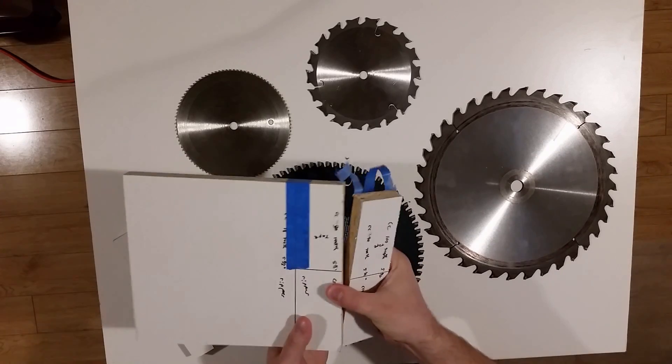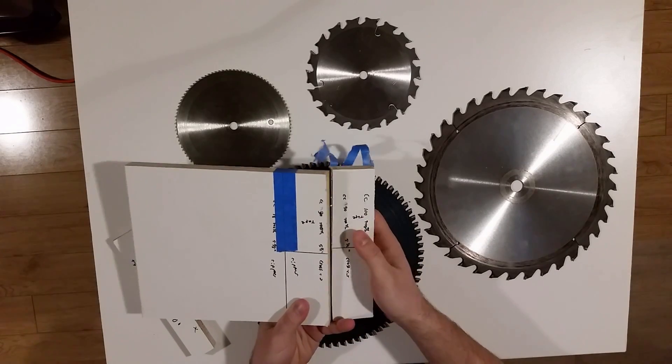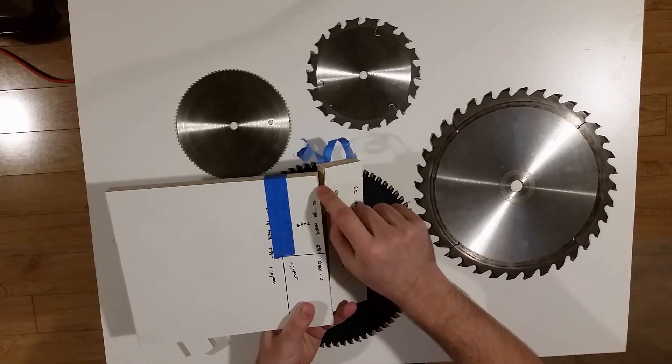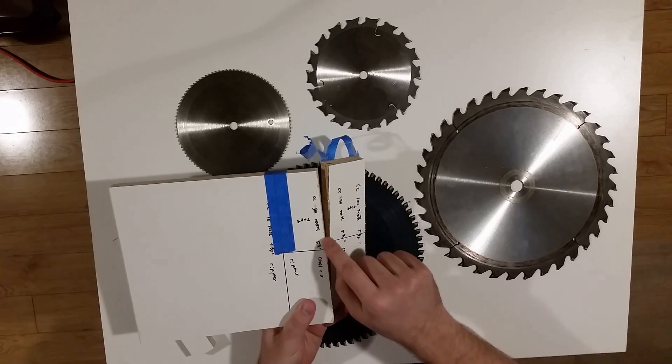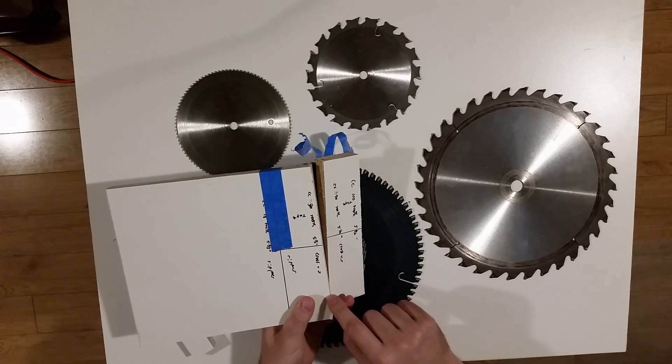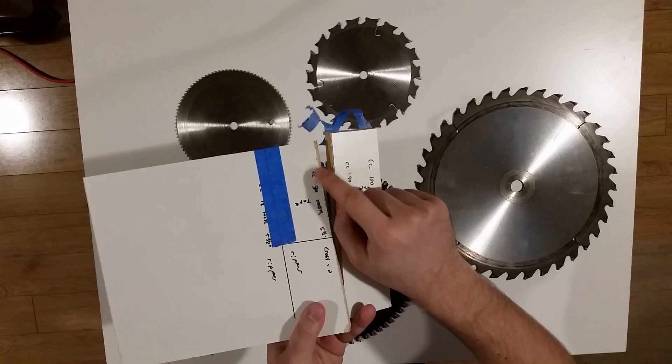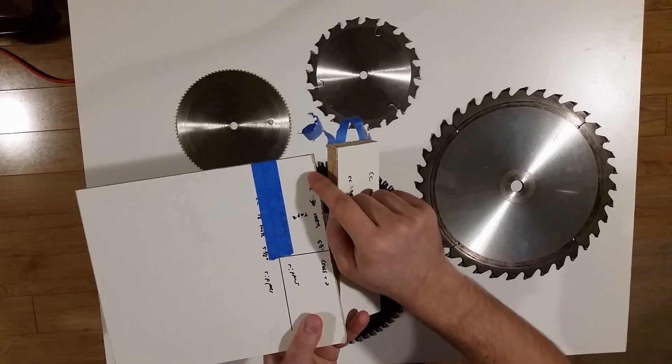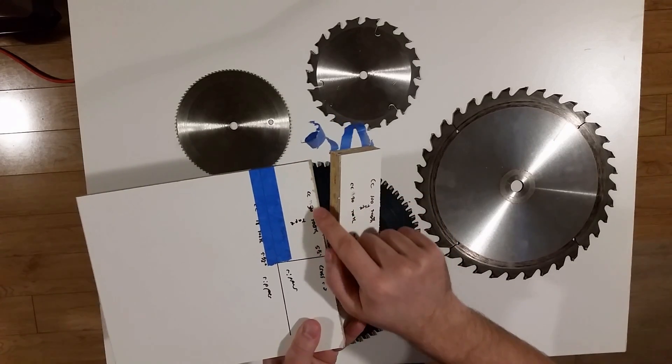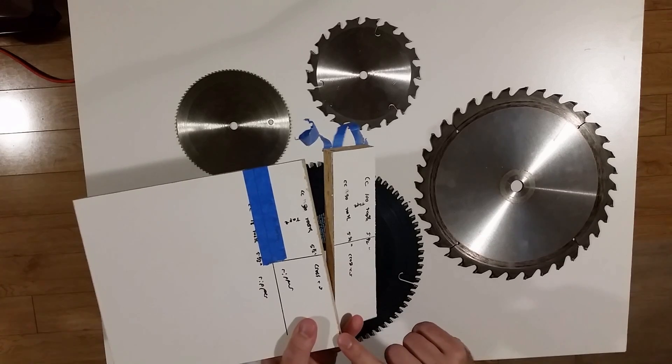And then our last one is the 18 tooth circular saw blade. This one was really problematic. You can see that it really tore into the top surface. And so this we can't fix. You can't just sand this. You're going to have a nice little chipped edge the whole way no matter what you do here.